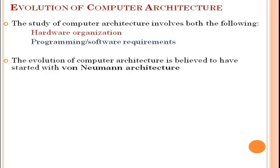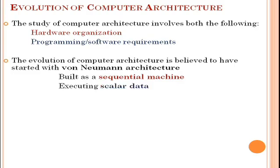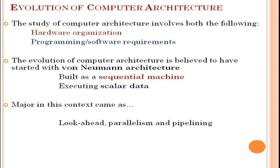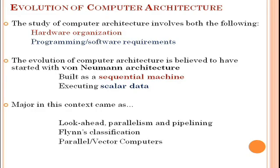The evolution of computer architecture is believed to have started with the von Neumann architecture, which is built as a sequential machine executing scalar data. In this context we will see: look-ahead parallelism and pipelining, then Flynn's classification, then parallel or vector computers, and the development layers.